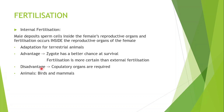A disadvantage is that copulatory organs are required. Internal fertilization occurs in birds and mammals — they use internal fertilization to reproduce.